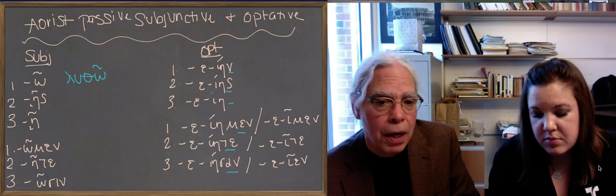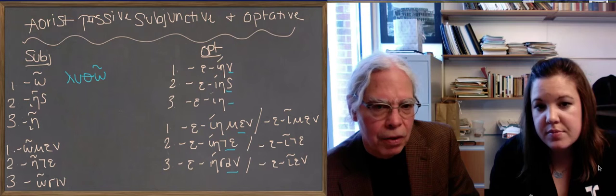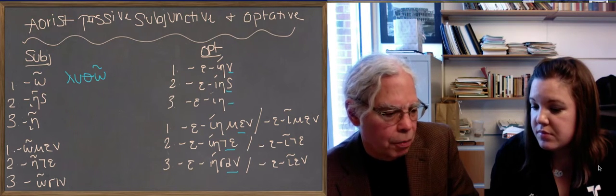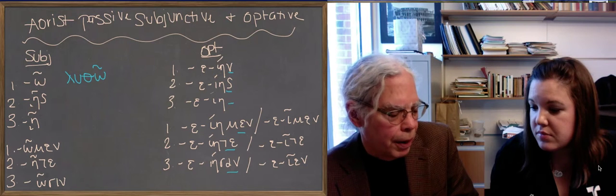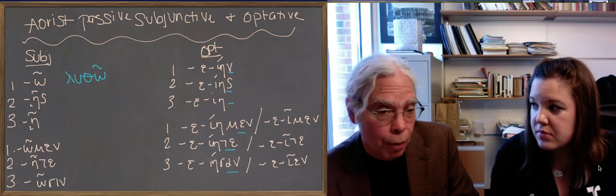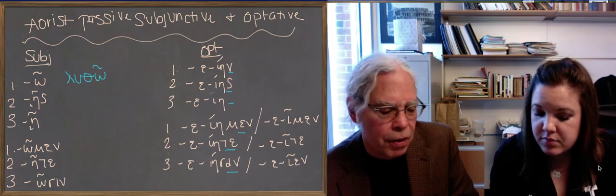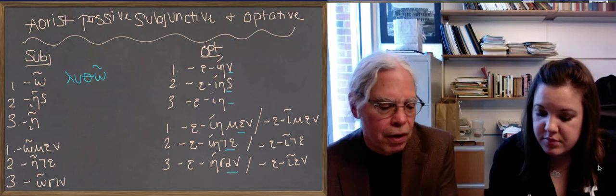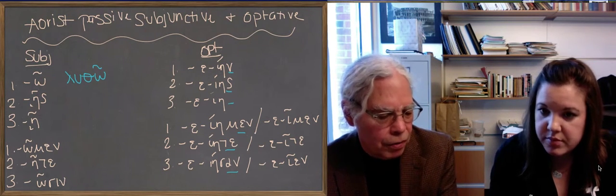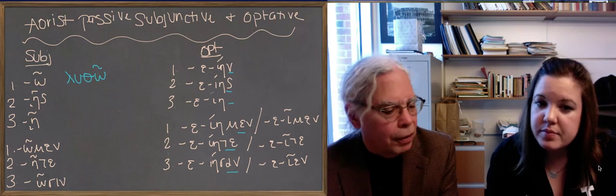In other words, those are the same endings as the aorist passive indicative. What distinguishes them is that the theta eta, which is the sign of the aorist passive indicative, becomes a theta epsilon or a plain epsilon in the optative. So that's what the epsilon there is, is a distinctive sign of the optative, and it makes it clear what's going on with these verbs and distinct from other forms of the verb.